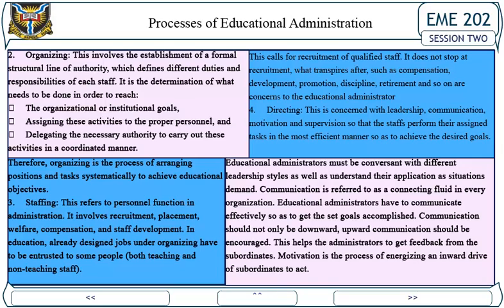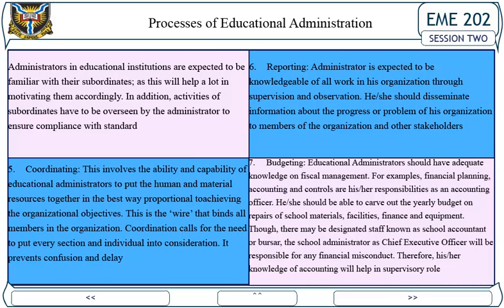3. Staffing: This refers to the personal function in administration. It involves recruitment, placement, welfare, compensation, and staff development. In education, already designed jobs under organizing have to be entrusted to some people, both teaching and non-teaching staff. This calls for recruitment of qualified staff. It does not stop at recruitment — what transpires after, such as compensation, development, promotion, discipline, retirement and so on, are also concerns of the educational administrator.